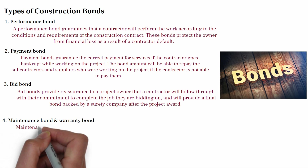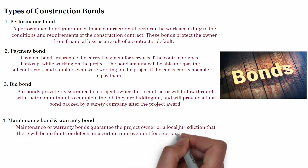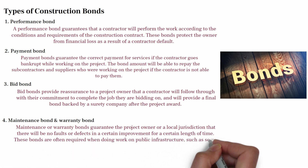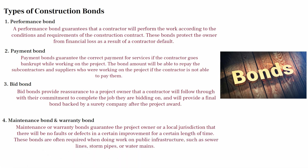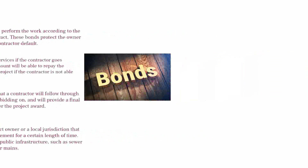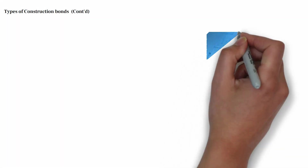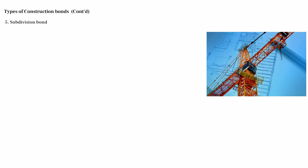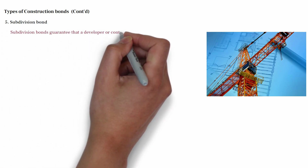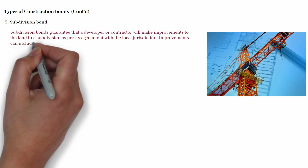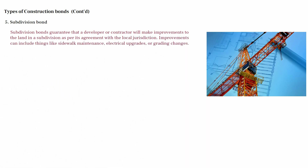Four: Maintenance bond or warranty bond — this guarantees to the project owner or local jurisdiction that there will be no fault or defect in a certain improvement for a certain length of time. These bonds are often required when doing work on public infrastructure such as sewer lines, storm pipes, and water mains. Five: Subdivision bond — this guarantees that a developer or contractor will make improvements to land in a subdivision as per the agreement with the local jurisdiction. Improvements can include things like sidewalk maintenance, electrical upgrades, or grading changes. The jurisdiction sets the bond amount and how soon the work needs to be completed.